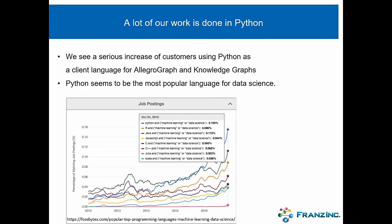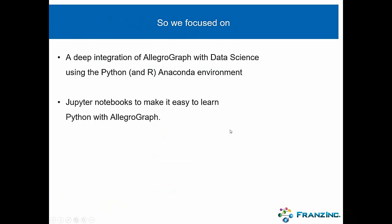How can you make that yourself? Well, a lot of our work is done in Python. We see a serious increase of customers using Python as the supply language for AllegroGraph and knowledge graphs, and it probably reflects the fact that Python is one of the most popular languages for data science. There's a great picture from fosbytes.com showing that Python is by far the most favorite language for machine learning and data science.